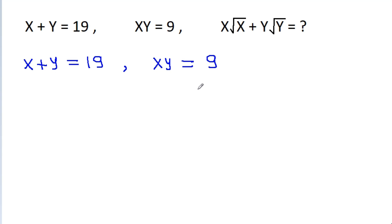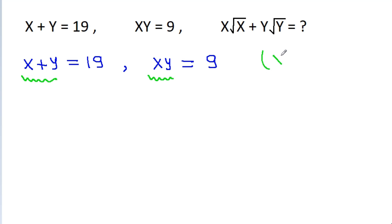We have the product of two numbers is positive, that means either both x and y are positive or both x and y are negative. And the sum of two numbers x and y is positive. So we get x and y both greater than 0.